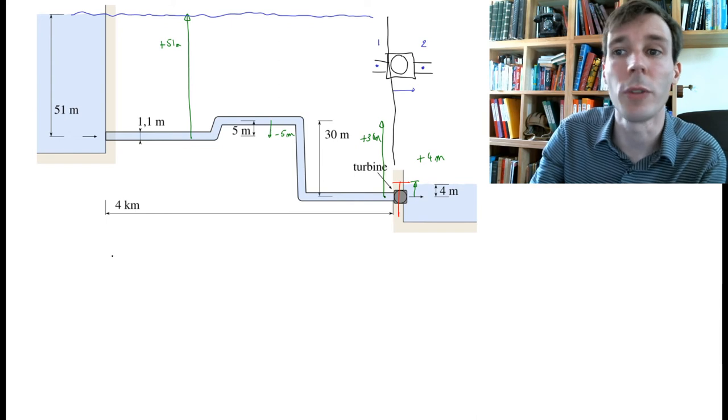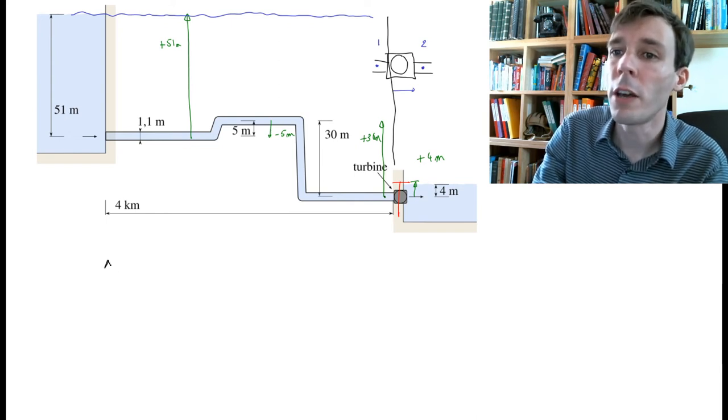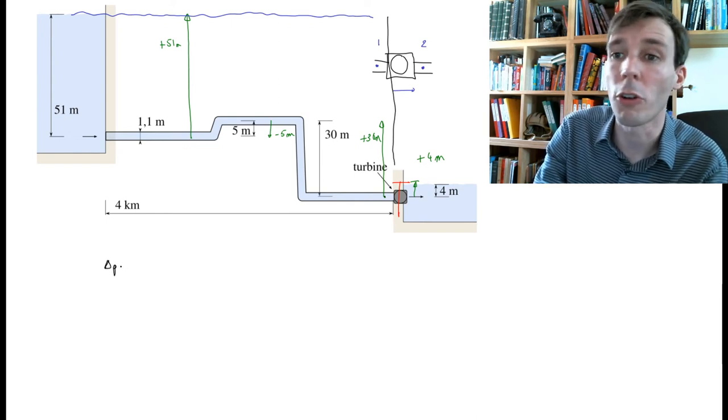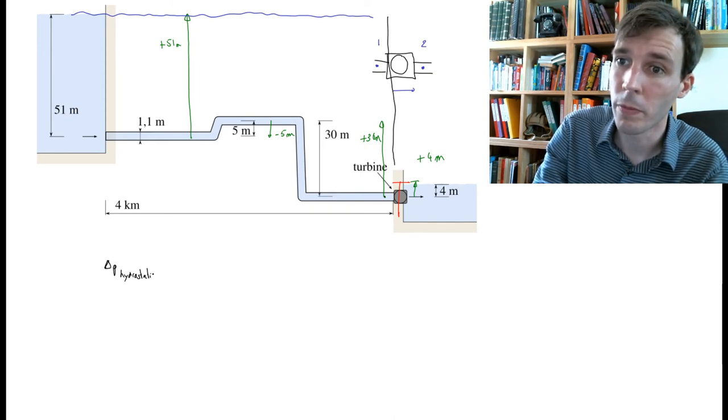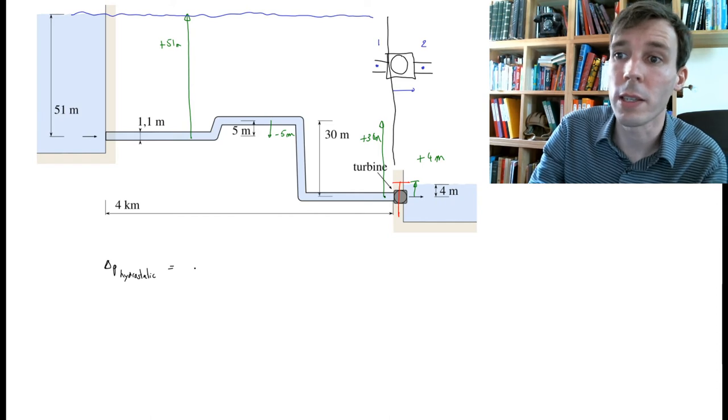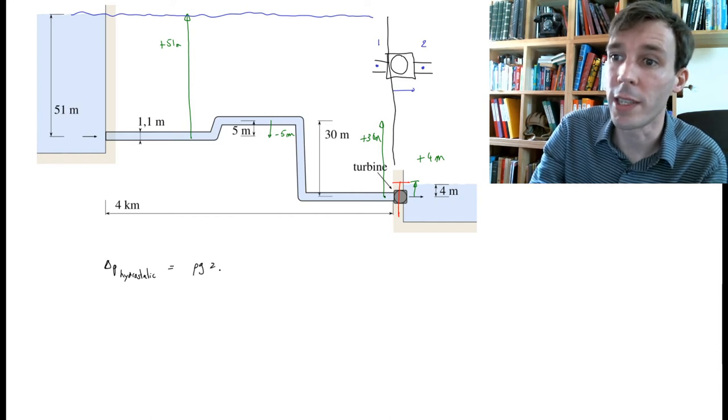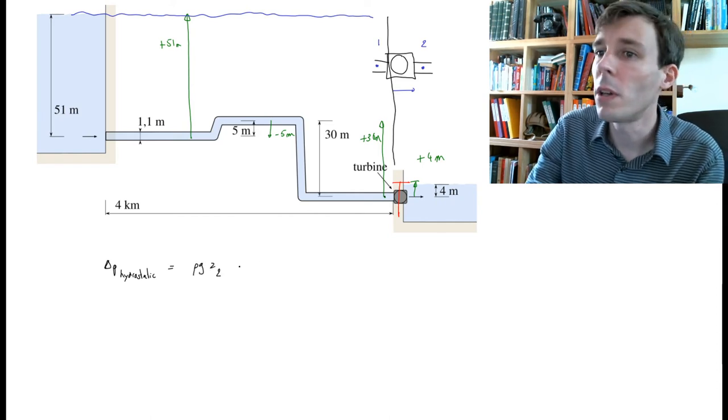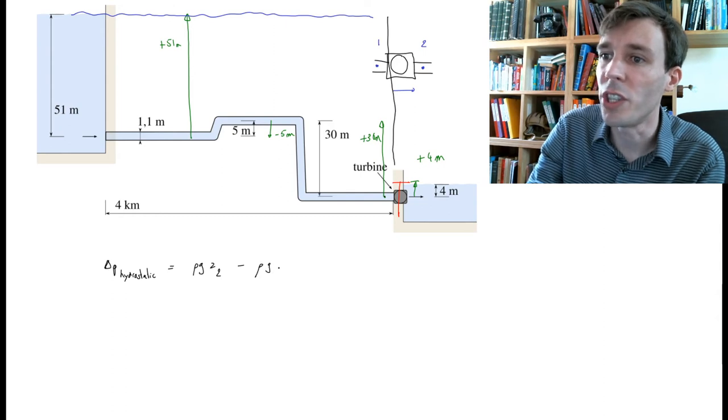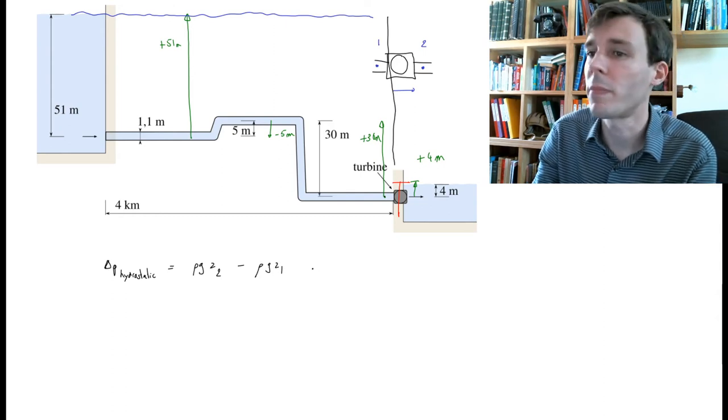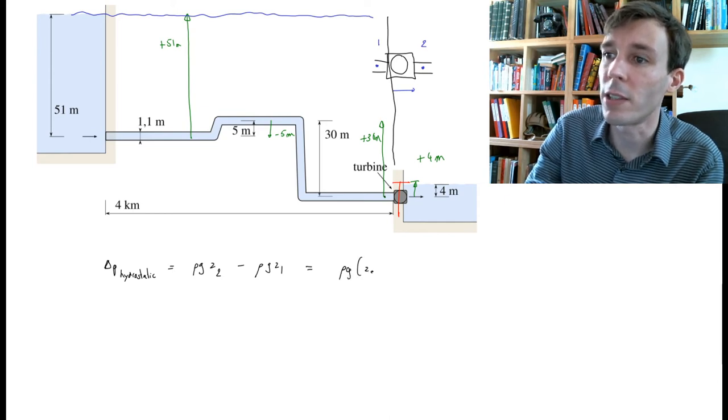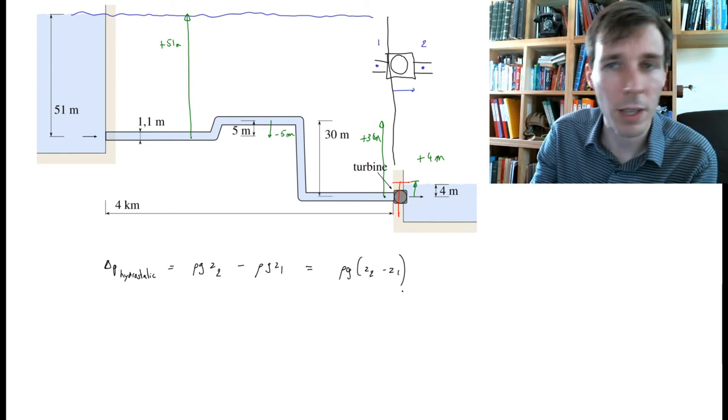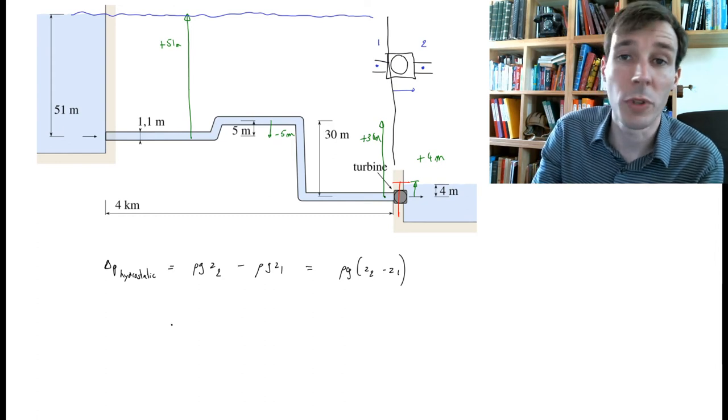So now formulating this into an answer, we have the delta p hydrostatic applying on the turbine. This is ρ*g*z2 - ρ*g*z1, which is ρ*g*(z2 - z1), and we can just put numbers in now.